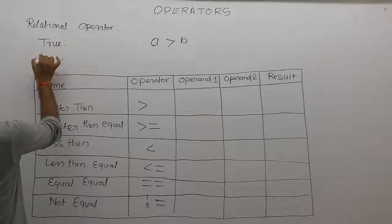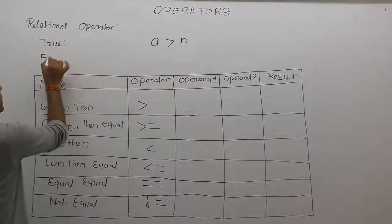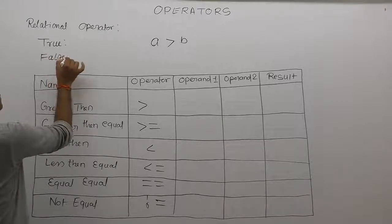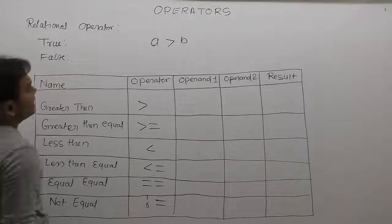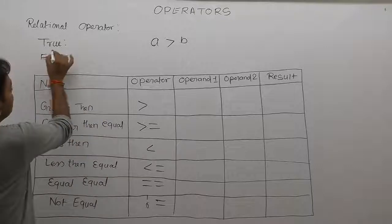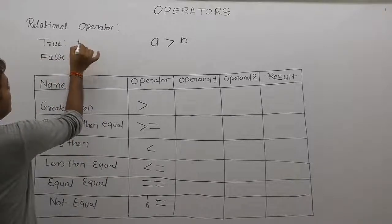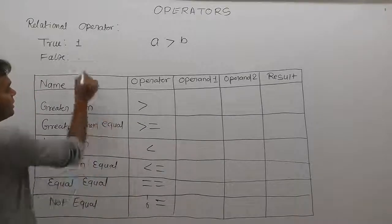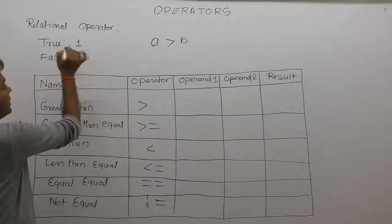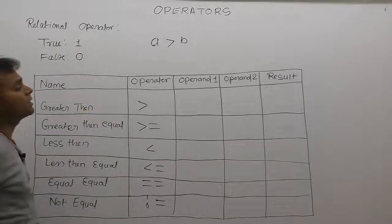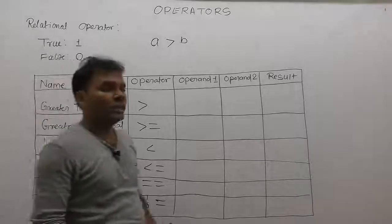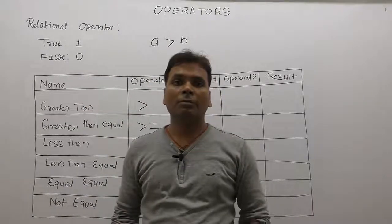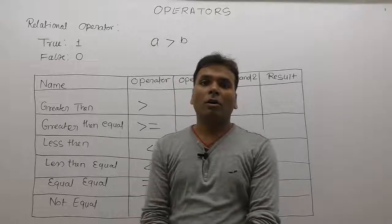The result can be either true or false. If the value is true, it is represented by one. If the value is false, it is represented by zero.